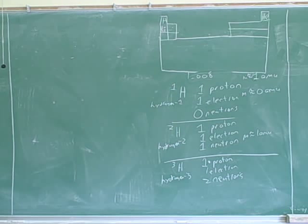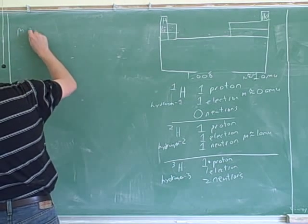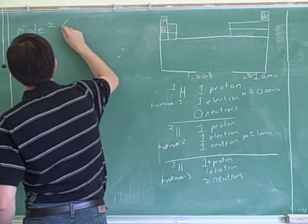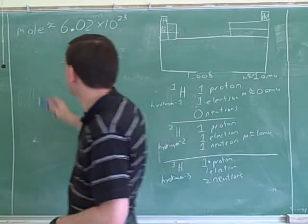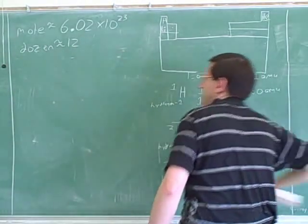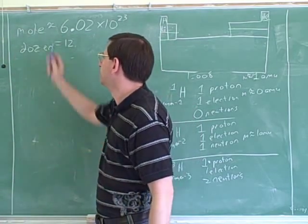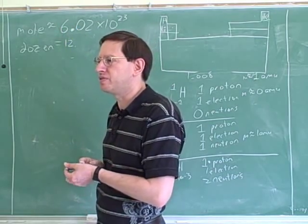Have you heard of the word dozen? There's nothing mysterious or weird about the word dozen — it's just the word for the number 12. The word dozen is just a special word that was invented for the number 12. Well, the word mole is pretty much just a special number for the number 6.02 times 10 to the 23rd. Just like a dozen means exactly 12, a mole is approximately 6.02 times 10 to the 23rd.